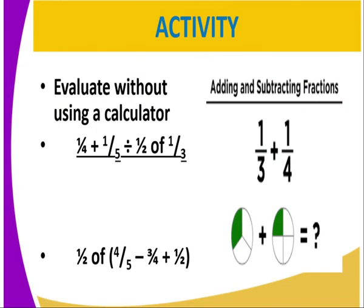Having done and said that, we can have the following activity, whereby you are required to evaluate, without using a calculator, the problem that is on our screen. That is a quarter plus 1 over 5, divided by half of 1 and a third. And also, you will get half of, in brackets, 4 over 5 minus 3 quarter plus half.